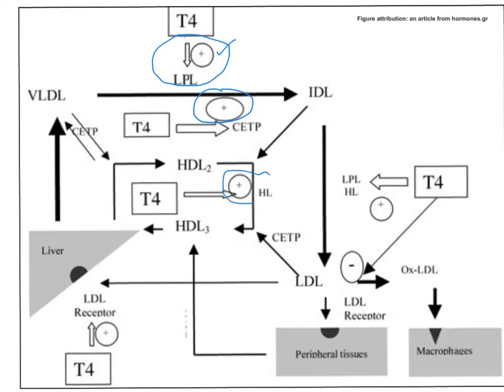Thyroid hormones also have a positive effect on hepatic lipase. Hepatic lipase degrades triglycerides present in HDL2 — a molecule rich in both triglycerides and cholesterol ester. As HDL2 passes through the hepatocyte membrane via the scavenger receptor B1, the adjacent hepatic lipase degrades triglycerides from HDL2 and converts it into HDL3, which is rich in cholesterol ester but has less triacylglycerol. This function is stimulated by T3 and T4.